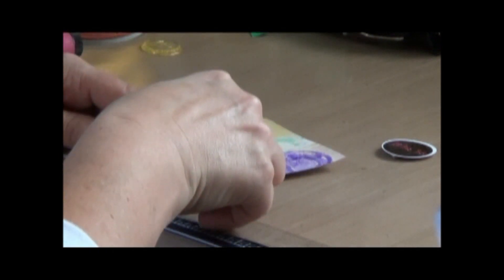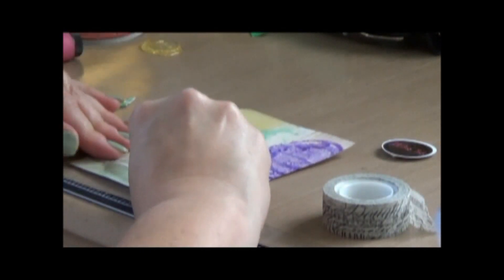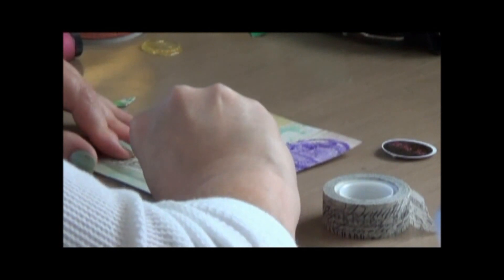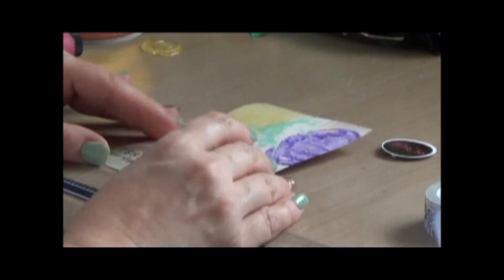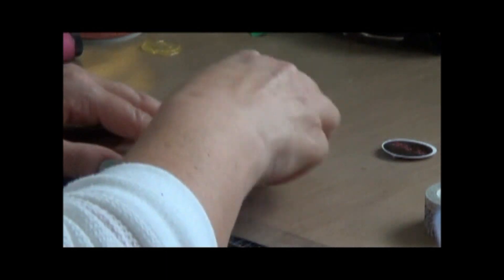Now I'm adding some tissue tape to the bottom portion of the card front, and I think I wrapped the left portion of it, and left the right portion of it kind of torn, which I think looks kind of neat.